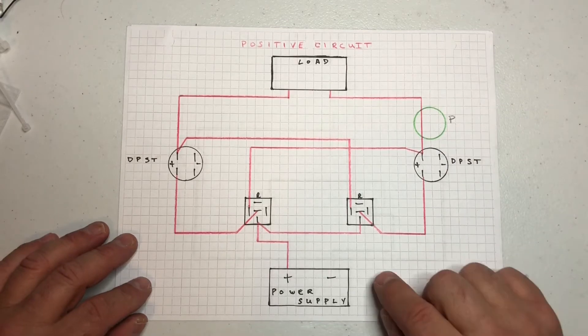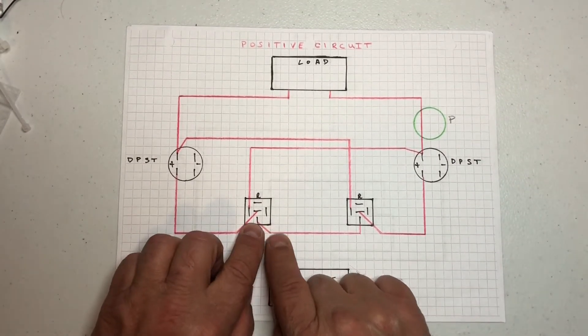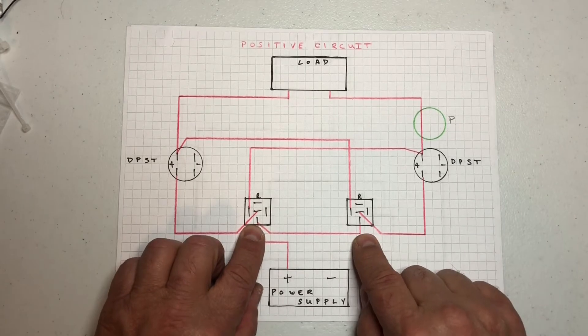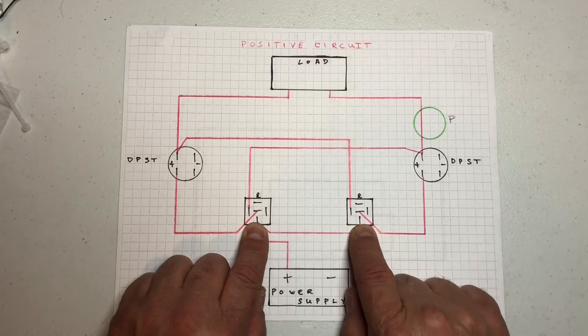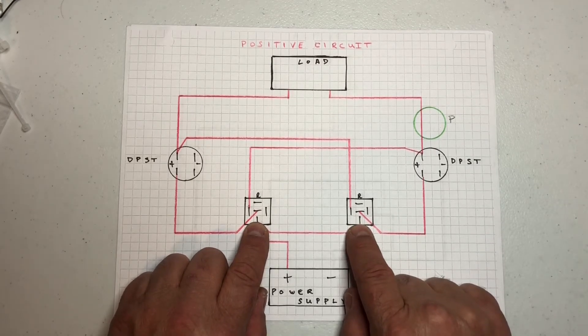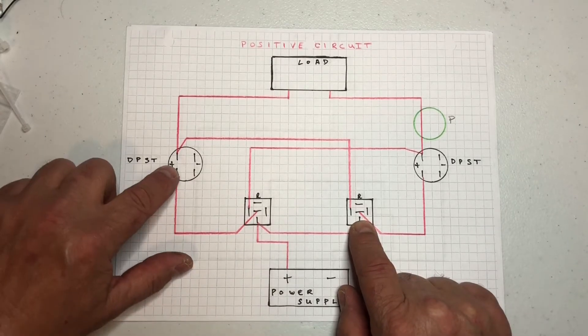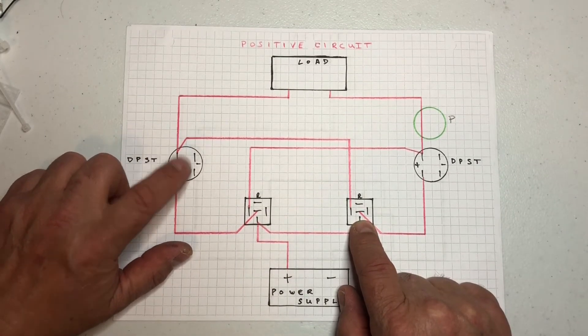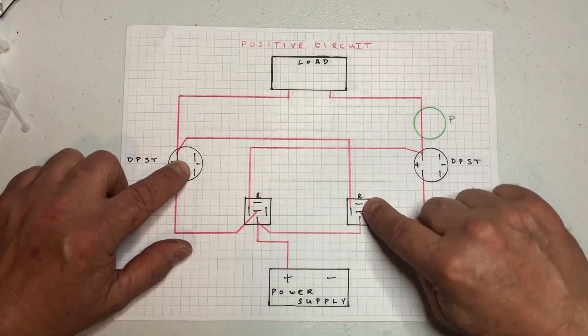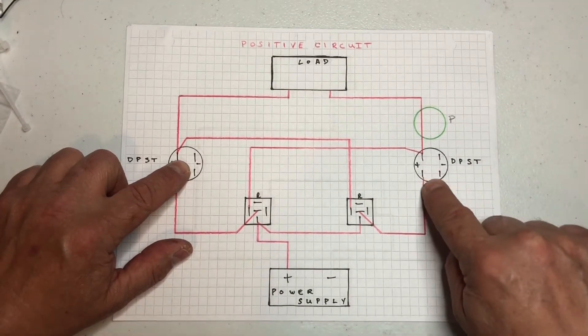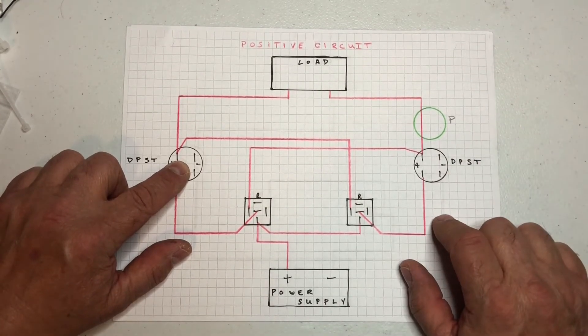So the positive side, you're going to feed the common post here on the relay. What that's going to do is these are closed right now so this would feed positive here. If I turn this switch on I'm going to feed positive to this coil which is going to open this relay and this positive will not exist here. So we can't have both of them on at the same time.